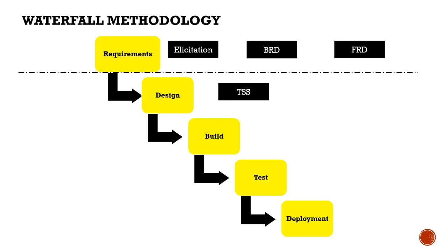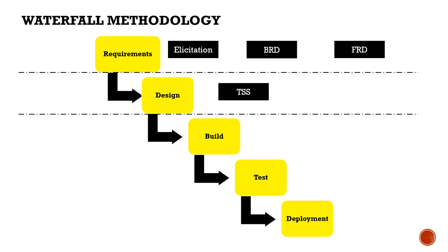The business analyst also reviews the Technical Specification to ensure all FRD items are covered. The document contains infrastructure requirements, database requirements, and pseudocode. It varies from project to project, but the concept is simple: it's the design to deliver the functional requirements. Once reviewed and signed off, this completes phase two and we move to phase three — build.